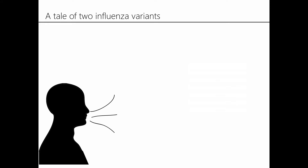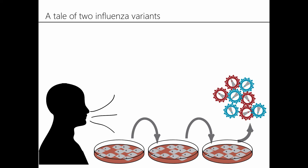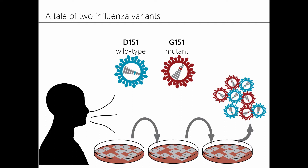I want to start by talking about a case of viral evolution in cell culture. This story starts about 10 years ago, when various flu labs around the world started noticing that when they took clinical flu samples and passaged them in cell culture, a certain flu variant would arise again and again. I'll refer to the wild-type variant in blue and the mutant variant in red. They differ by just a single nucleotide mutation, D151G, in the viral exit protein.